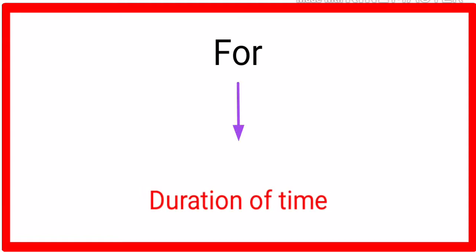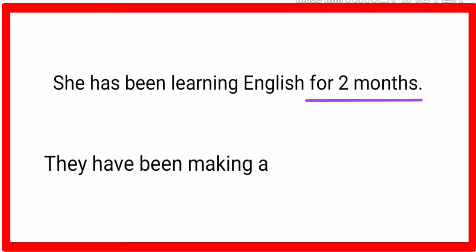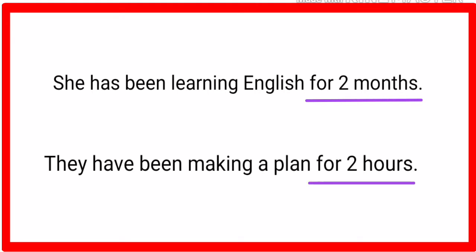Now let's talk about 'for'. We use 'for' in sentences when we talk about duration of time — that means we're not sure of the exact time. Here are some examples: 'She has been learning English for two months.' Two months is not exact time. Another example: 'They have been making a plan for two hours.' Two hours is a duration of time, not exact time, that's why we use 'for'.